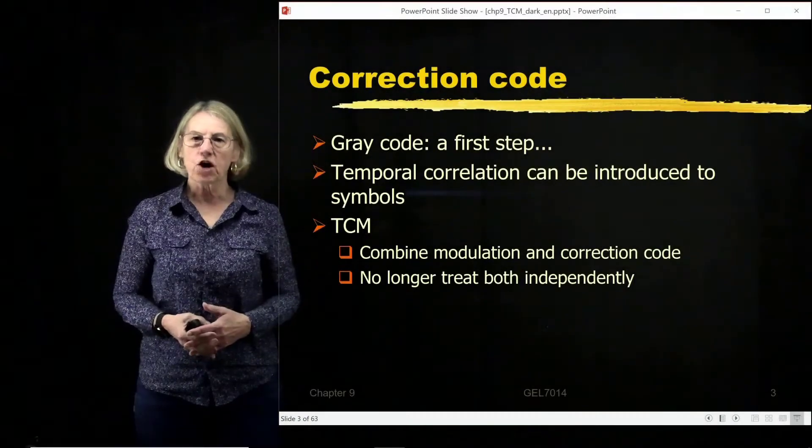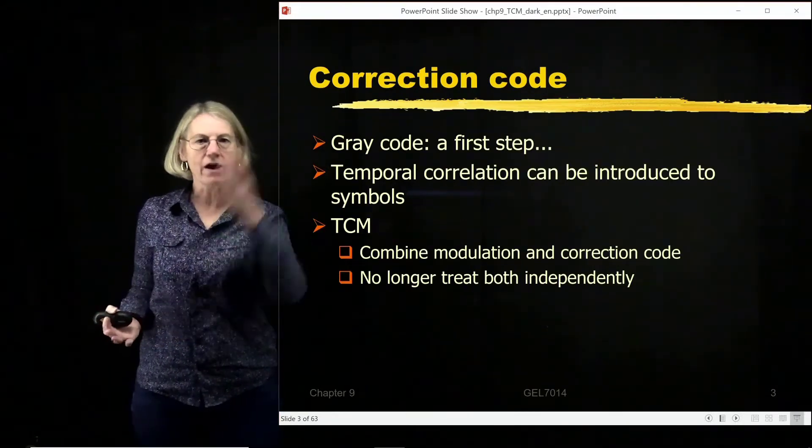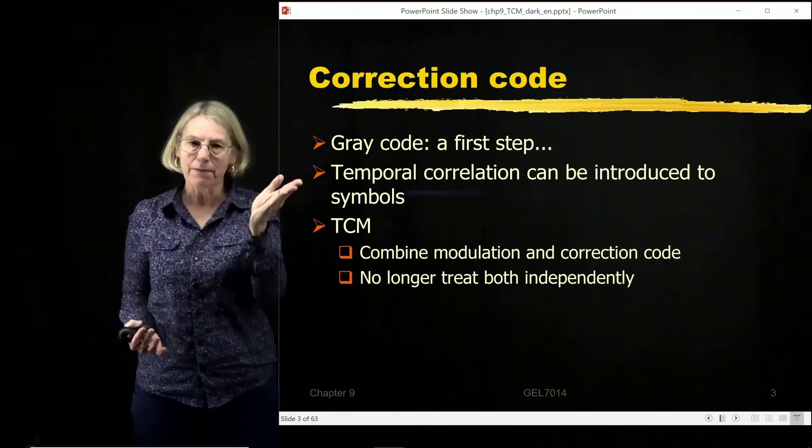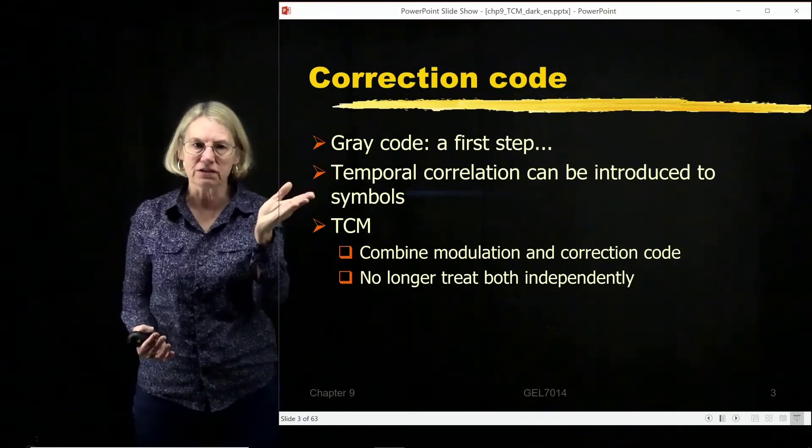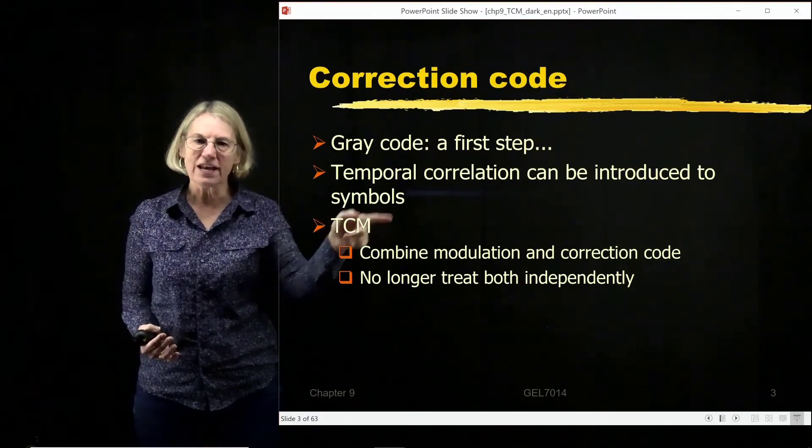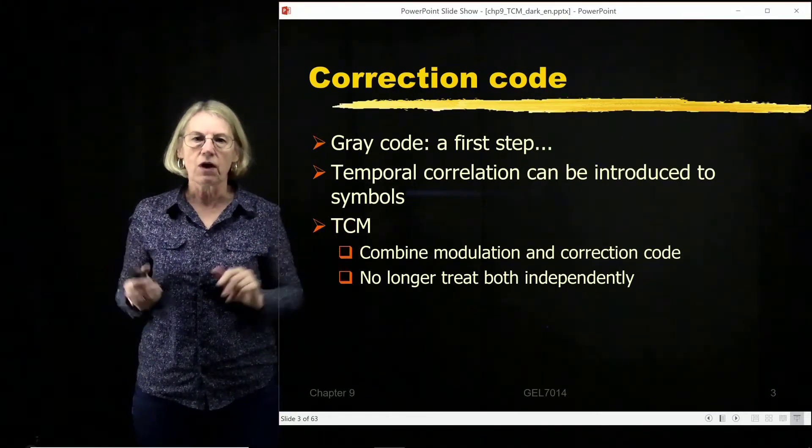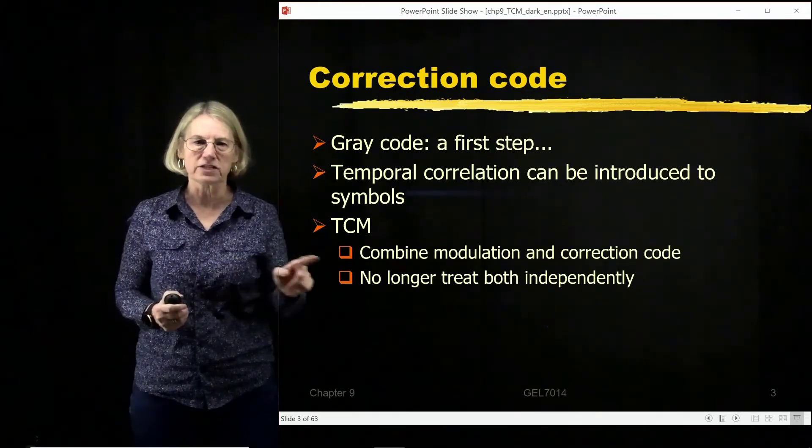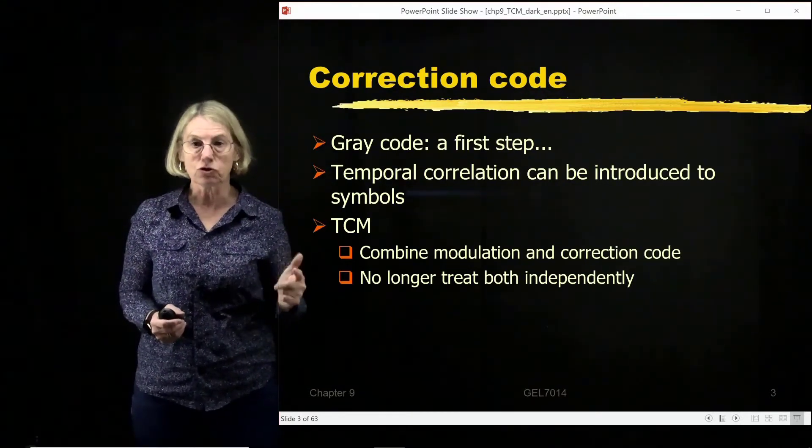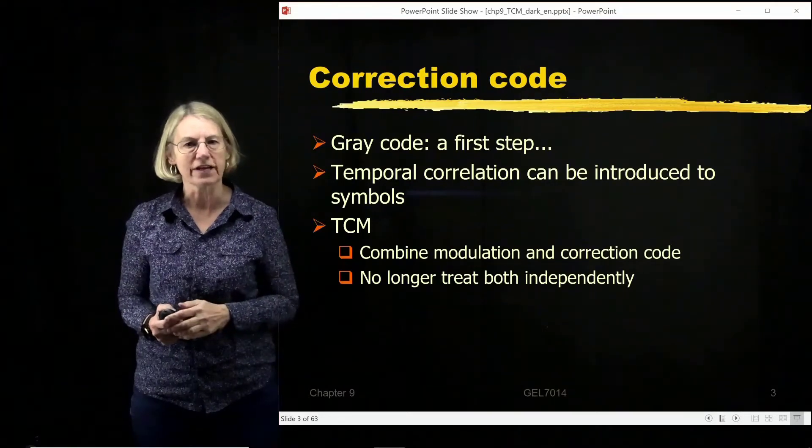So trellis coded modulation is a combination of a bit sequence allocation and convolutional coding or error correcting coding. So the bit assignment is kind of like gray code, kind of like a first step. And the second step is in the error correction code where we introduce temporal correlation between symbols. So in trellis coded modulation the idea of modulation and error correction is no longer two separate steps which are independent from one another. So how does that change when we go to trellis coded modulation versus what we've seen so far? We started out with modulation then we added convolutional coding or error correction coding and now we're going to somehow combine them into trellis coded modulation or TCM.